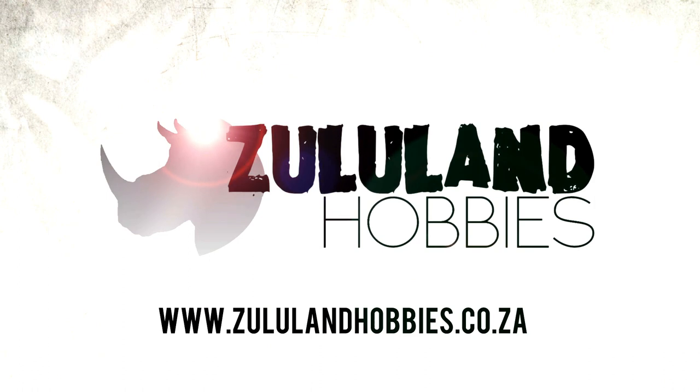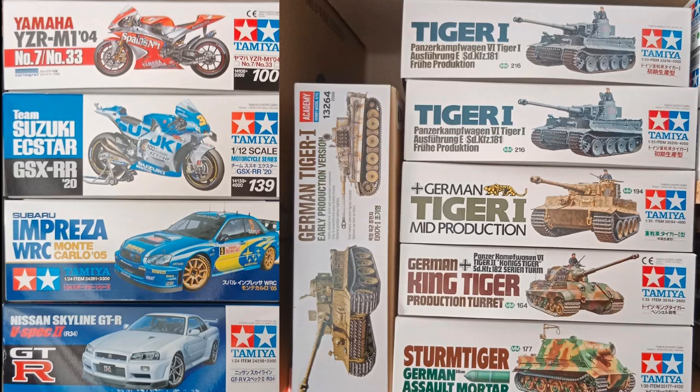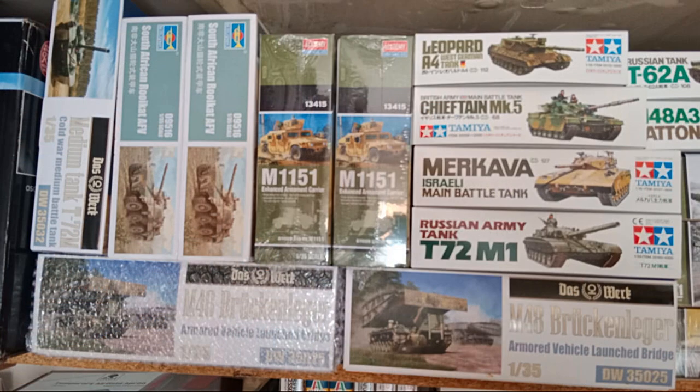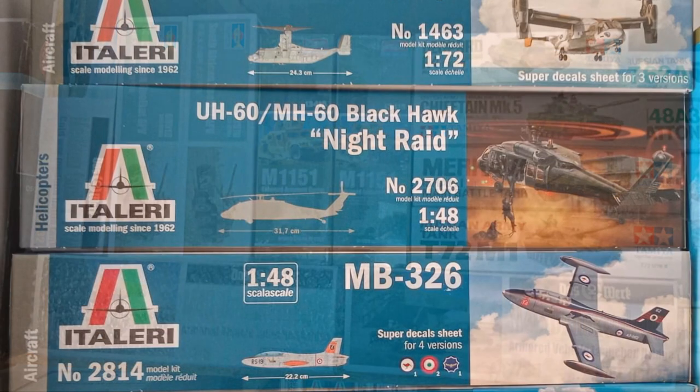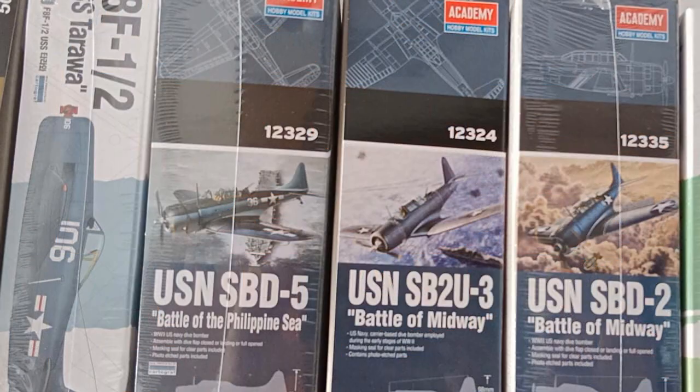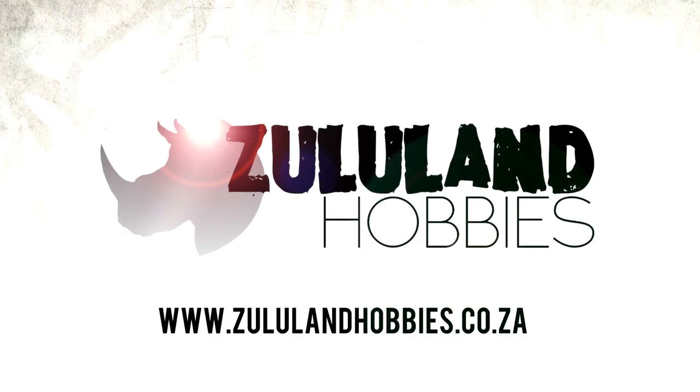That's right guys, this build is sponsored by Zululand Hobbies here in South Africa. Check out their website zululandhobbies.co.za. They receive a lot of new stock - all sorts of kits from Tamiya vehicle armor and a few bikes, some new trumpeter kits, a few from Italeri, from Academy. So do head on over to their website and have a look. You'll definitely find something there that will grab your interest.